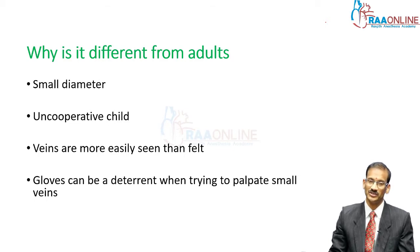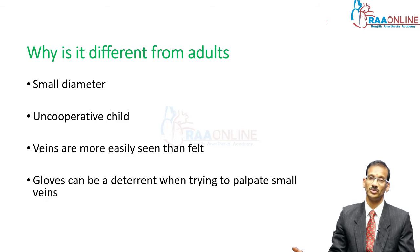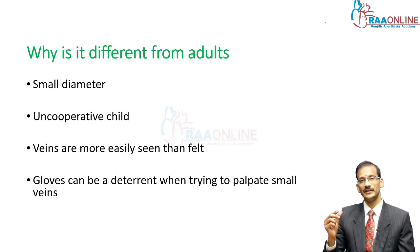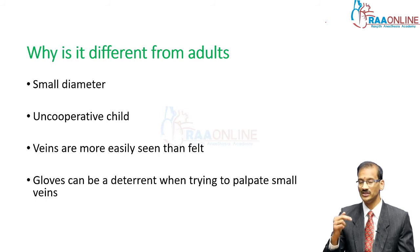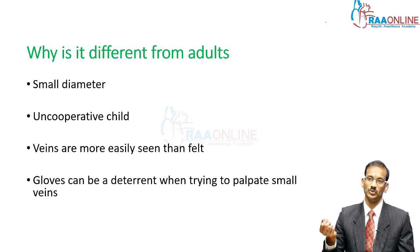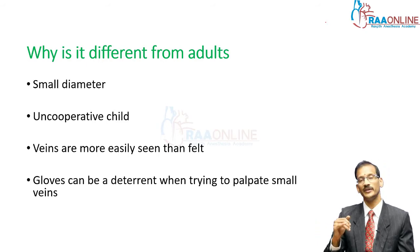Coming to the anatomical reasons — they have a smaller diameter, they could have a lot of subcutaneous fat in some children, so it can be more difficult to cannulate these children. The diameter of veins is small, and compared to an adult, you may not feel them in small children, but you can see a sort of greenish tinge where the veins are situated. For the same reason, when you cannulate small children, gloves may be a hindrance to palpate the vein and cannulate them, so you might have to do it without gloves.